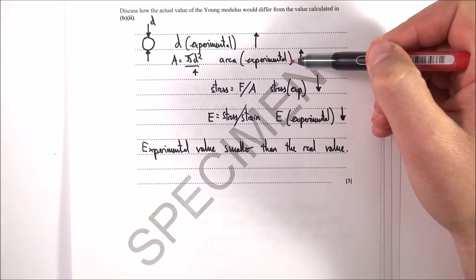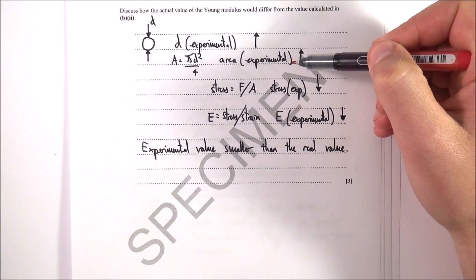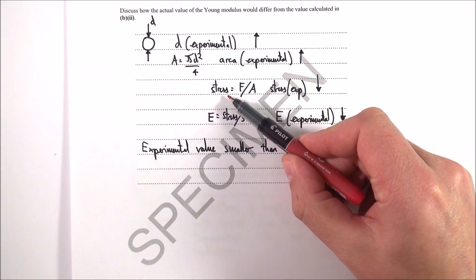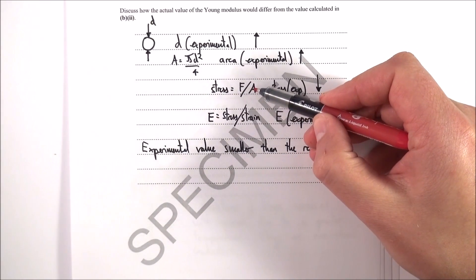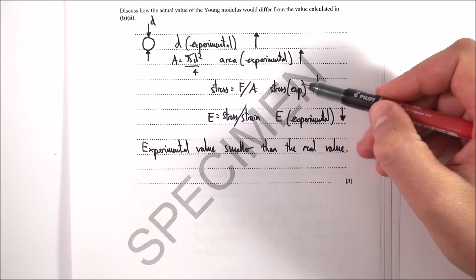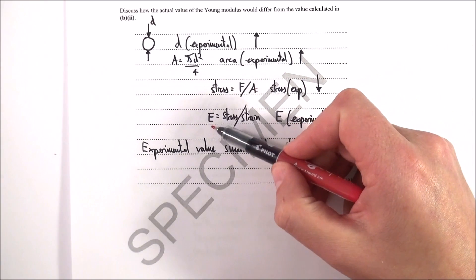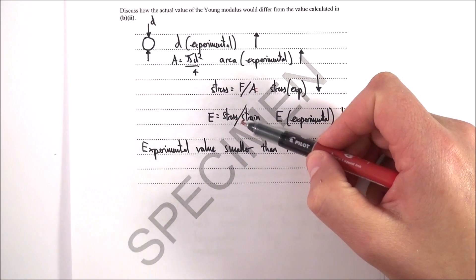This means that the area, which is equal to pi d squared over four or pi r squared, means they overestimated the area of the wire. When it came to looking at stress - stress is equal to force divided by area - if the value of the area was too big, this means the value of the stress was too small.